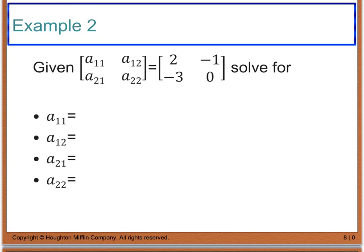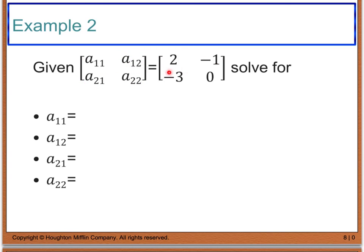Looking at example 2, we are given that one matrix equals another. Because they have the same dimensions — both are 2 by 2 with 2 rows and 2 columns — and corresponding entries are equal, we can solve: A sub 1,1 equals 2; A sub 1,2 equals negative 1; A sub 2,1 equals negative 3; and A sub 2,2 equals 0.